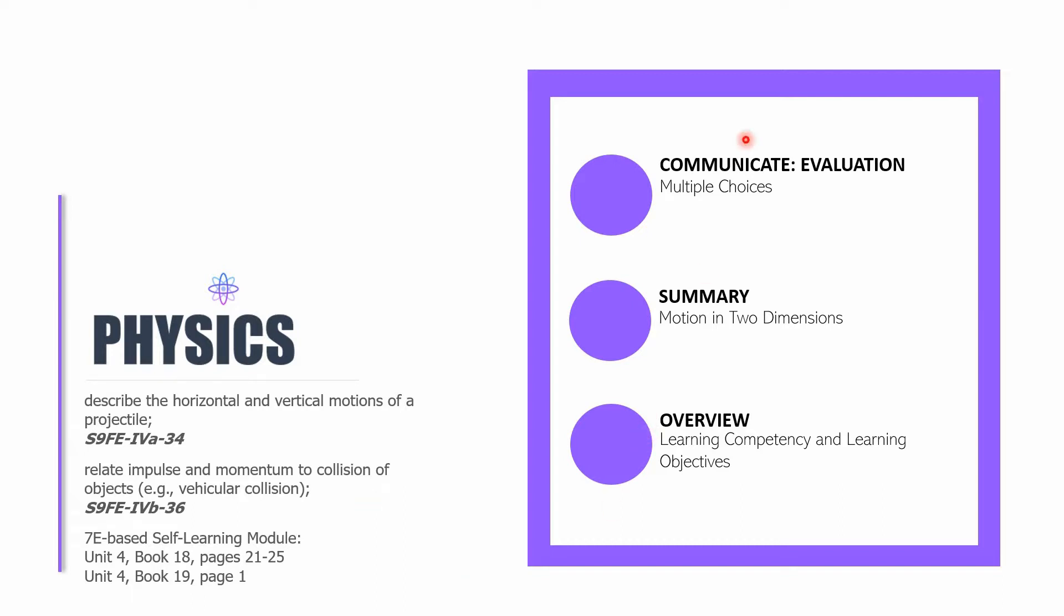The parts of this session are the following. The first is communicate which is the last section in the 7E-based self-learning module. And we will be having an evaluation which is comprised of multiple choices. And then for the second part, we will be having a reading of the summary of the entire book, book 18, which is about motion in two dimensions. In this part, we will read the generalizations, the summary statements.